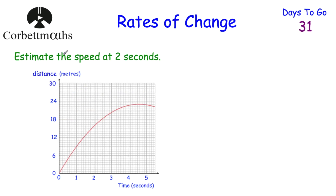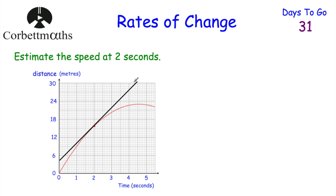Let's have a look at our next question. We've been given a distance-time graph with distance and time, and we've been asked to estimate the speed at 2 seconds. Feel free to press pause now and think how you'd estimate the speed of this object at 2 seconds. If we want to estimate the speed at 2 seconds, we're going to draw a tangent to the curve at 2 seconds. So let's choose two points on that tangent.